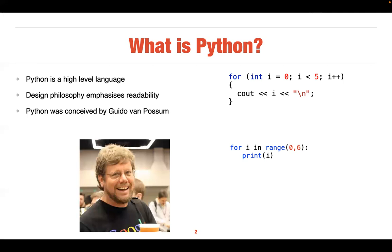Python was first conceived by a Danish person, Guido van Rossum. One important difference is that in C++ indentation doesn't really matter — it's mostly for readability. But in Python, indentation is mandatory. If you don't indent properly, the compiler will show an error.